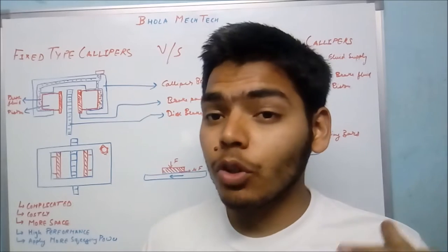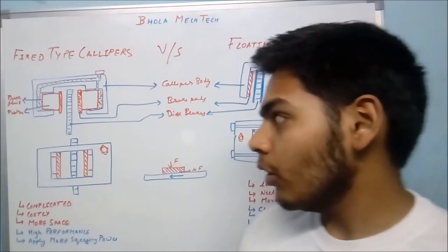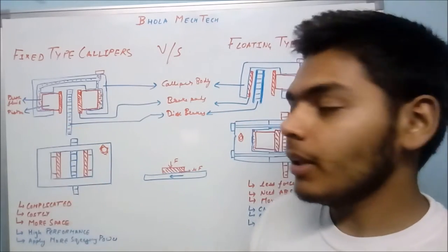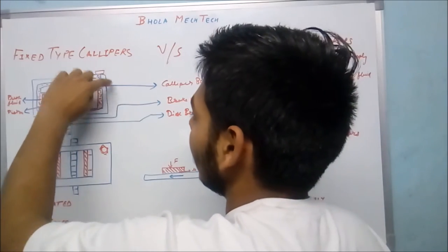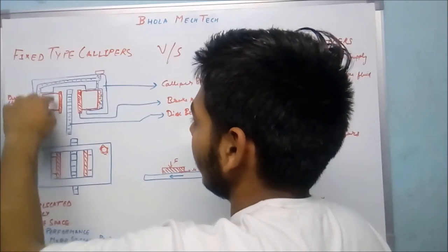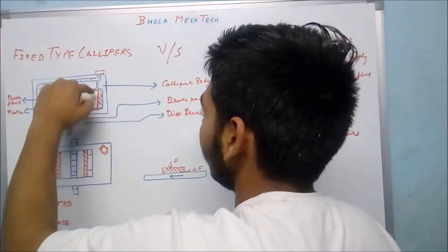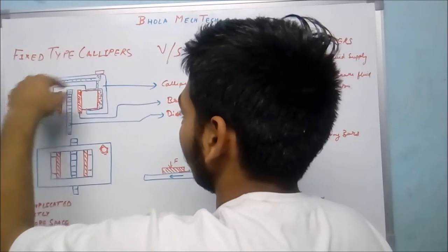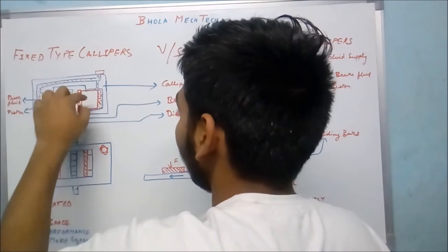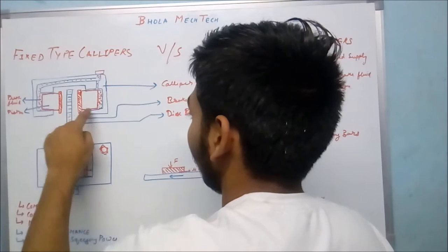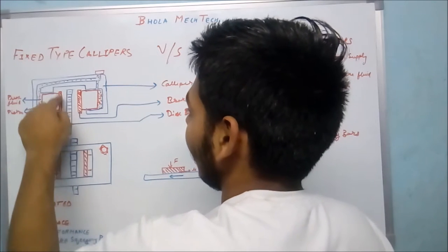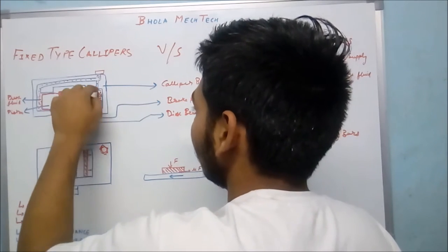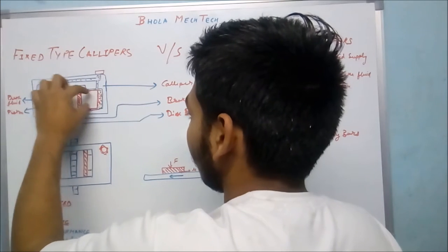First of all, elaborating the diagram of the fixed type caliper. This blue line part is the caliper body. This is the cavity for the pressure screw to come inside. These are the brake pads and these are the brake pistons.